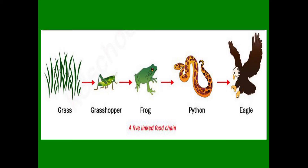See the picture. Here is a diagram of a food chain. Grass is a producer. Grasshopper, a frog, a carnivore — python. All consumers. Here is a food chain.